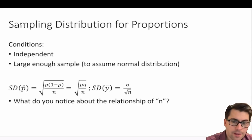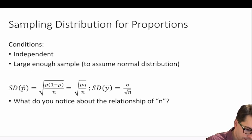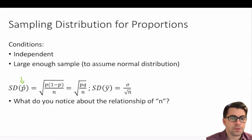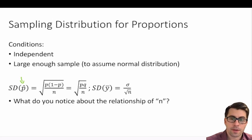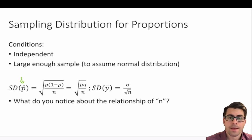Let's talk about calculating the standard deviation for the proportion of our sample, otherwise known as the standard deviation of p-hat. That is equal to the square root of p times one minus p, divided by n. We can simplify that to the square root of p times q divided by n, where p and q is the proportion for our population.